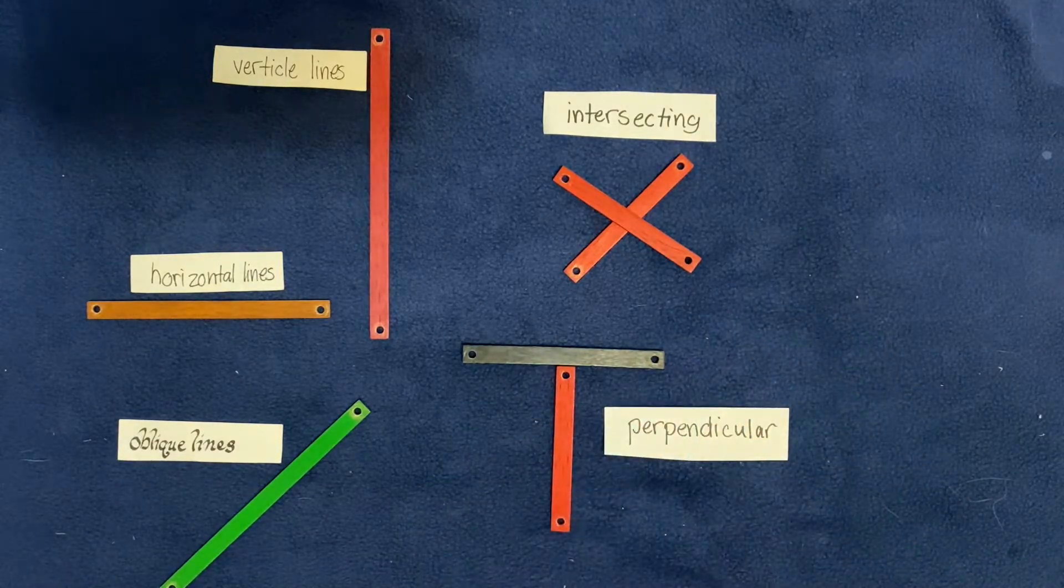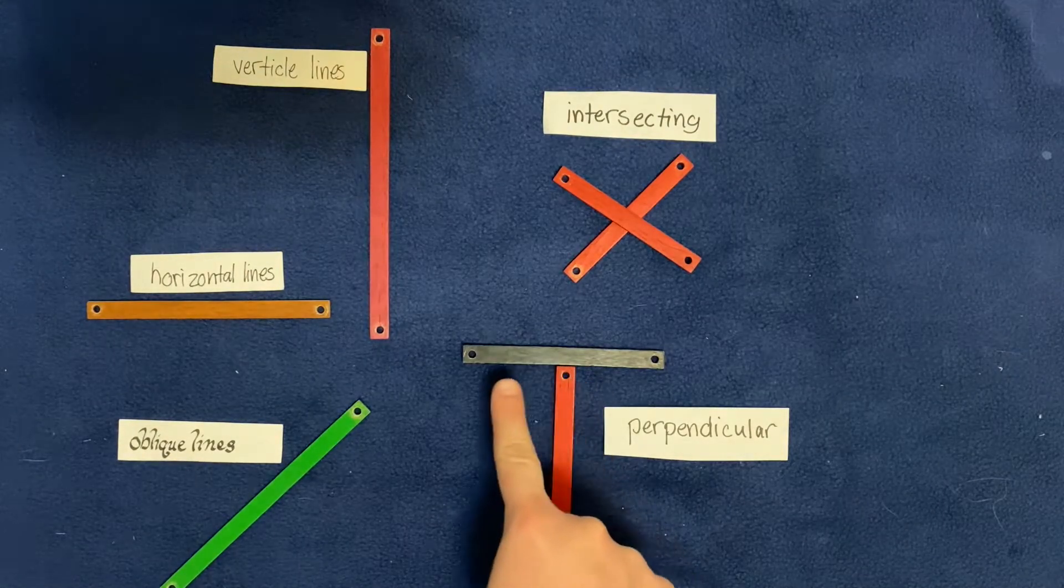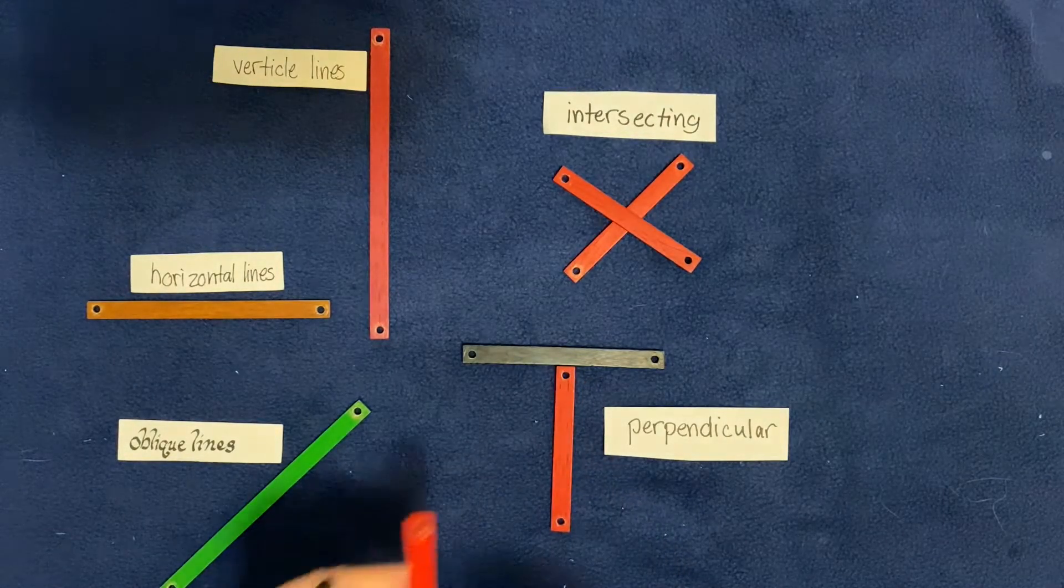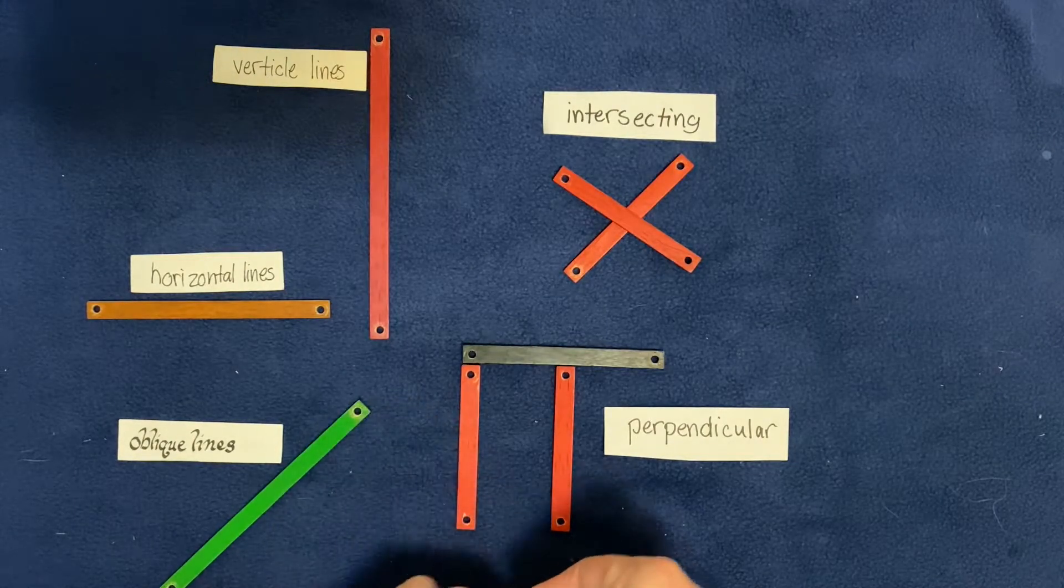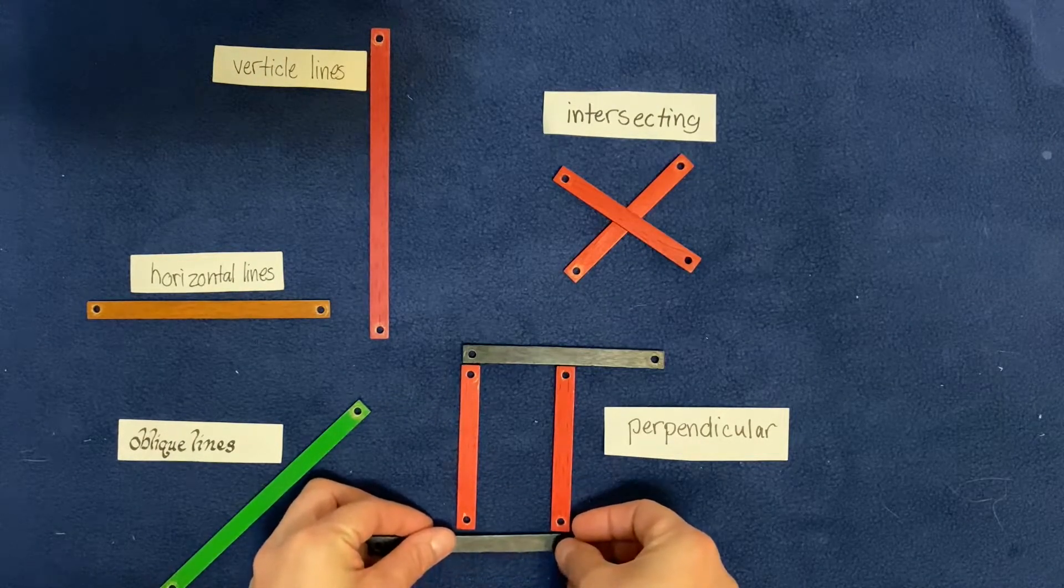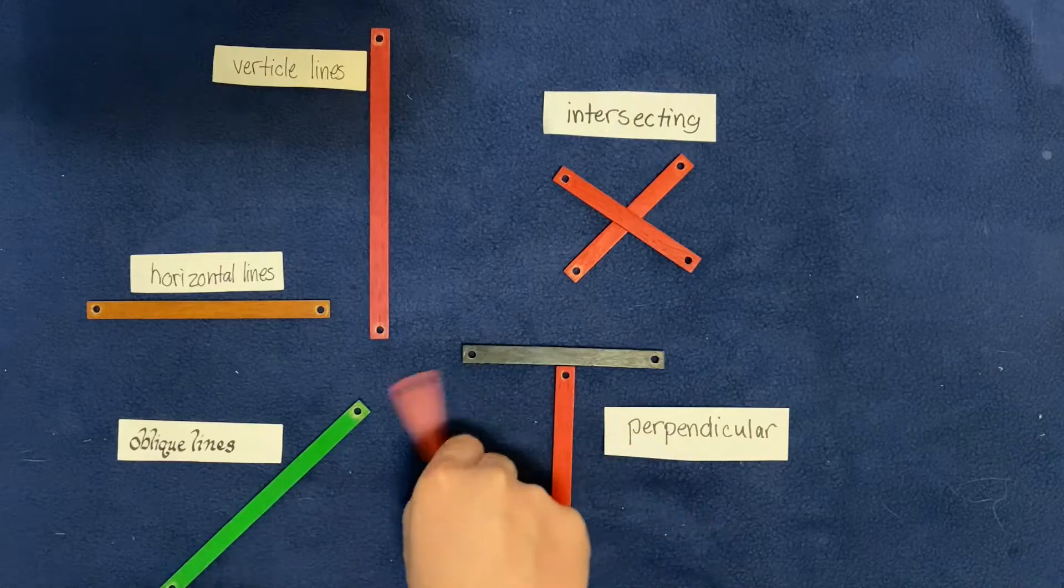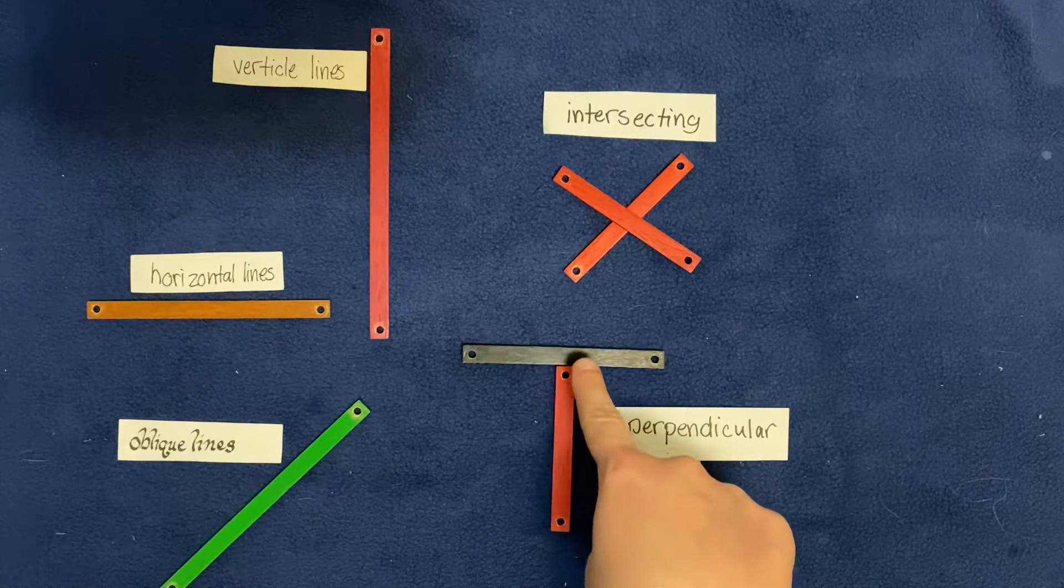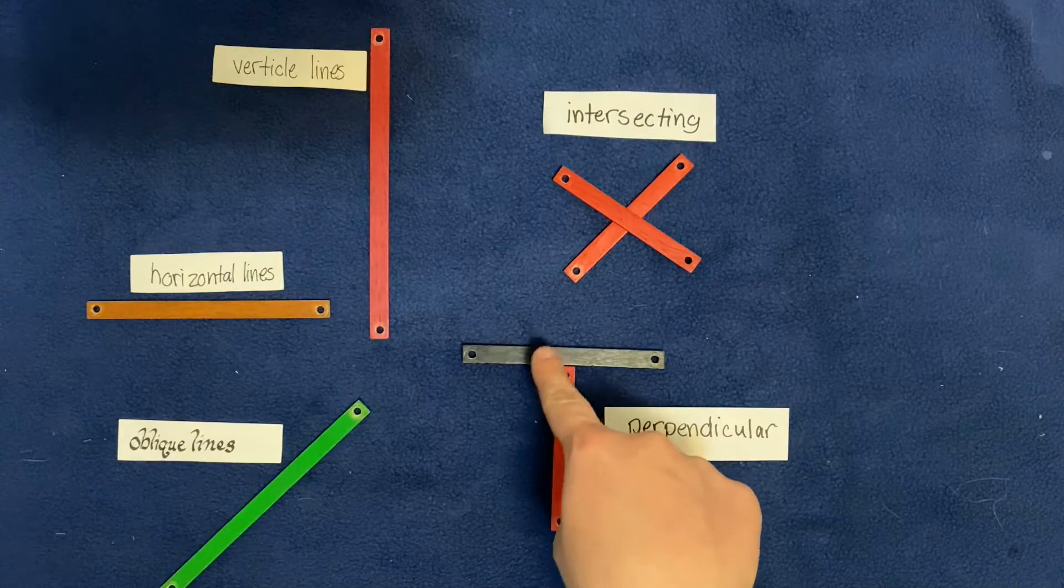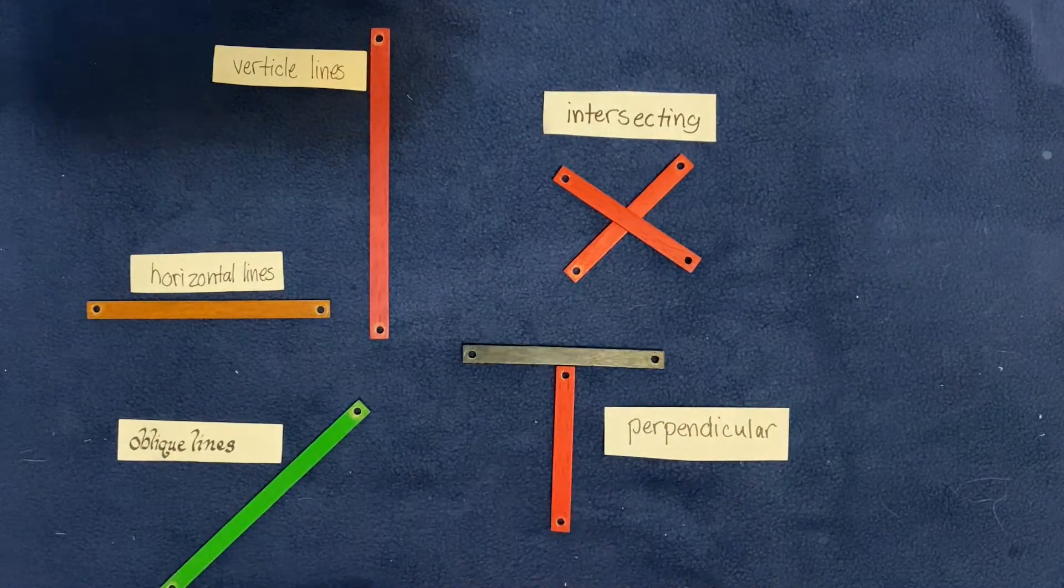You see how it makes almost like the corner of a rectangle? I did this and this—think it's making a rectangle. When two lines come together and make that perfect L in the corner, that's called a perpendicular line.